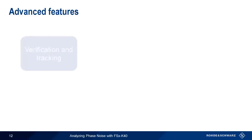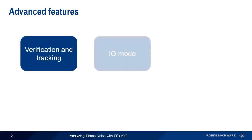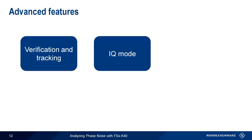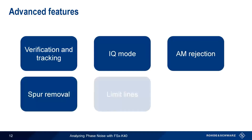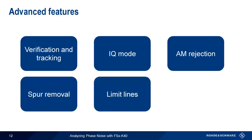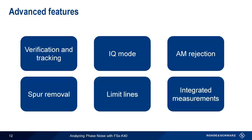In addition to these basic functions, the K40 phase noise measurement option also includes many advanced features, such as verification and tracking, IQ mode, AM rejection, spur removal, limit lines, and integrated or residual phase noise measurements. Let's take a few minutes to look at each one of these, starting with verification and tracking.